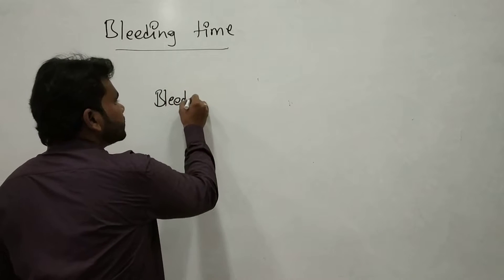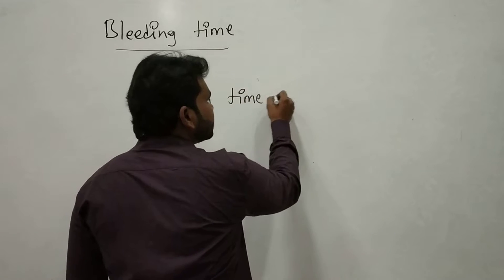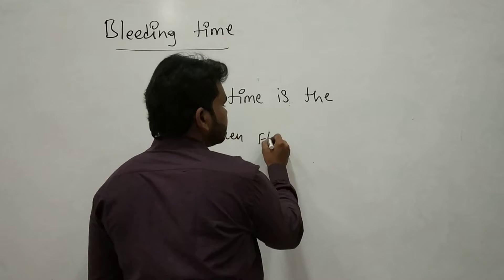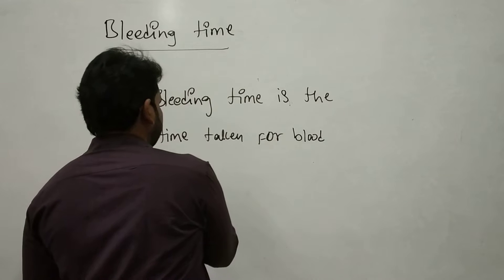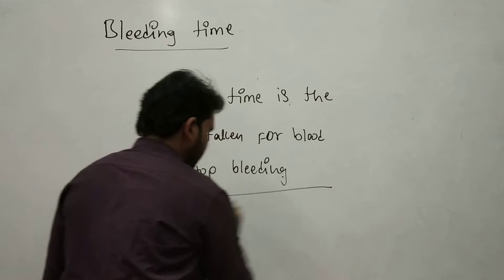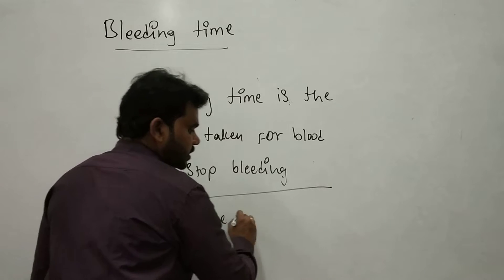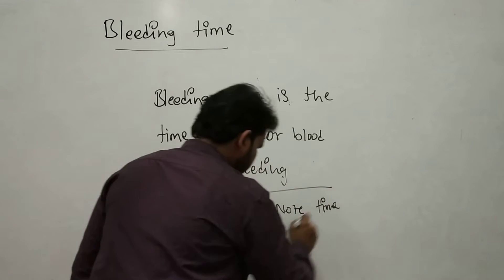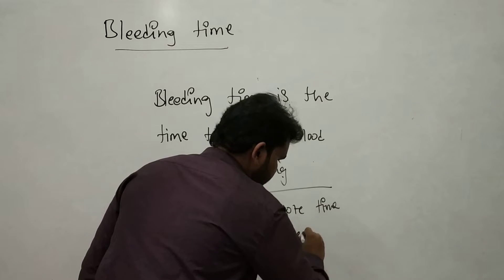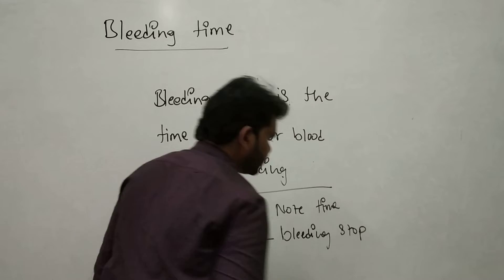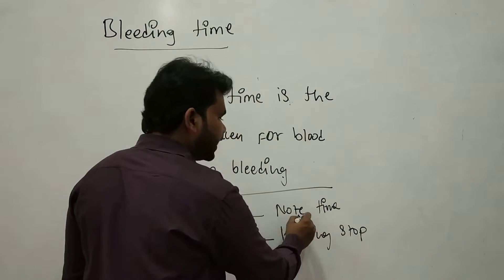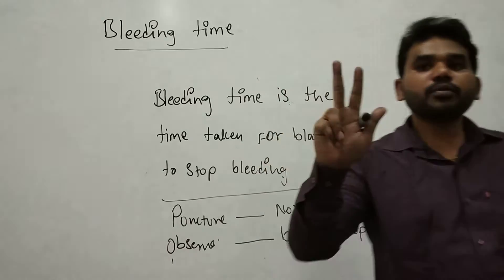The definition is: bleeding time is the time taken — we will make a puncture and load the time and observe when bleeding will flow. The time when the bleeding has started and the time when the bleeding has stopped — the interval, the duration between the starting and ending of bleeding, is called bleeding time.